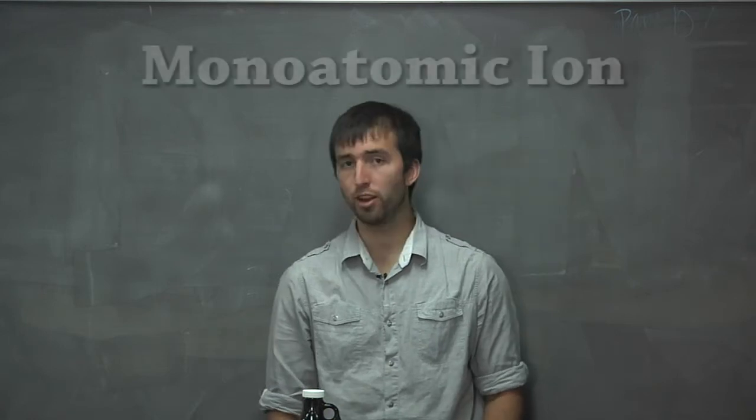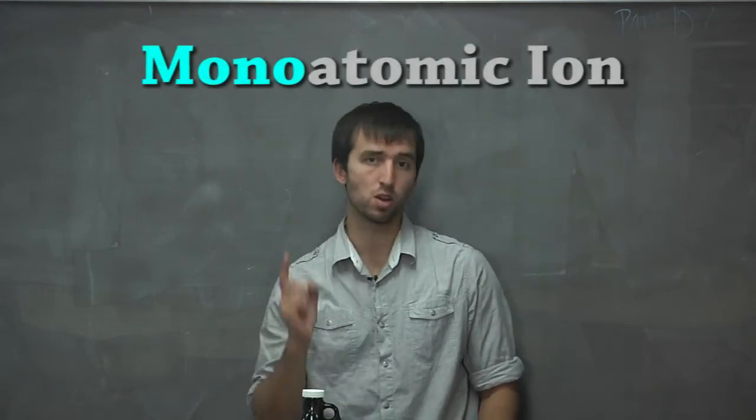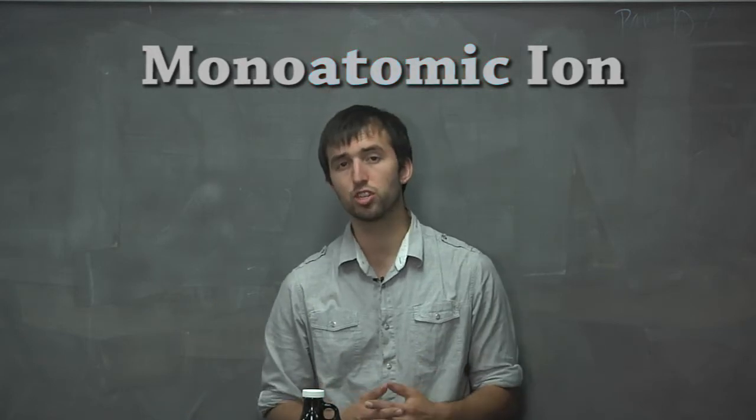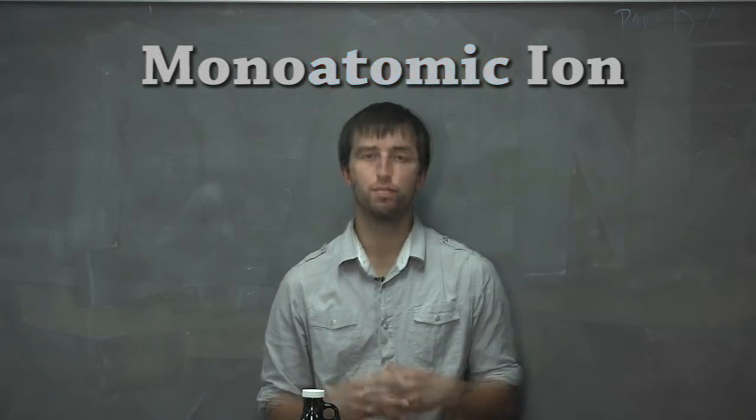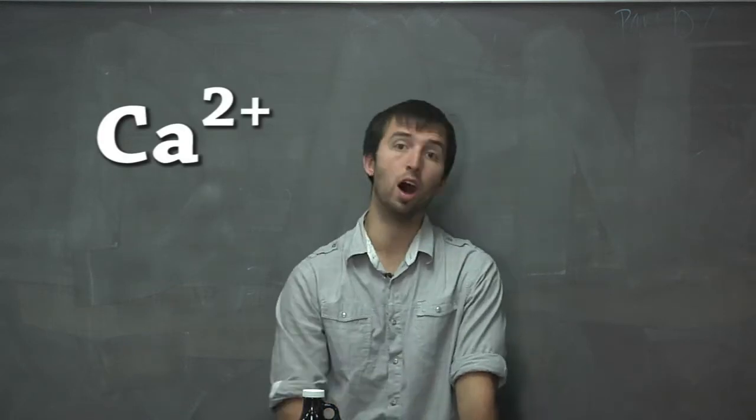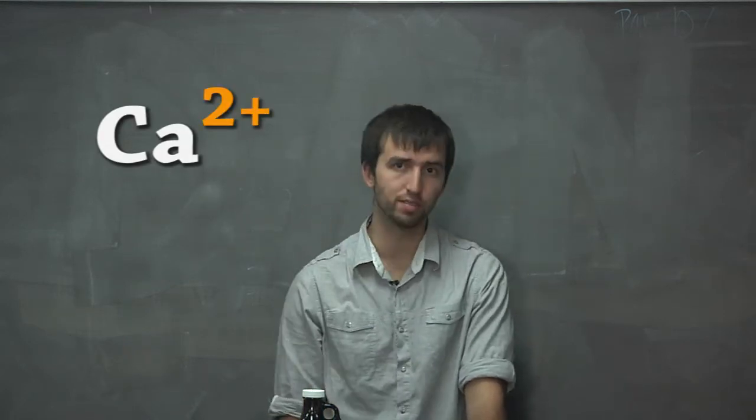The oxidation state of a monoatomic ion, mono meaning one, atomic meaning atom, is essentially the charge that the ion has. For example, if we have calcium two plus, it has an oxidation state of two, positive two.